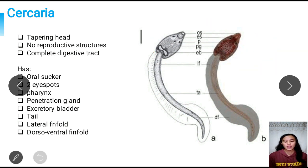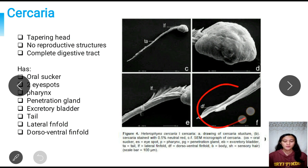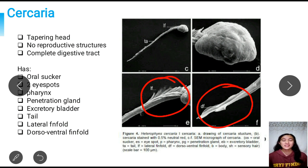The cercaria's tail has two parts: the lateral fin fold and the dorsal-ventral fin fold. It also has sensory hairs which are sensitive to stimuli, allowing the cercaria to locate its host.